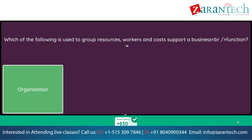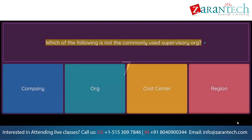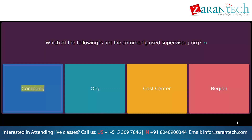Which of the following is not the commonly used supervisory org? Option 1: Company. Option 2: Org. Option 3: Cost Center. Option 4: Region.